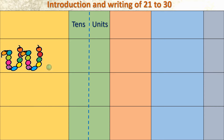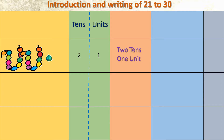Now here one more bead is added. We will write in the tens and units column. How many tens? Two tens. How many units? One unit. Same thing we will write in words: two tens, one unit. What is the number formed? 21. And in numerals, we write 20 and 1.